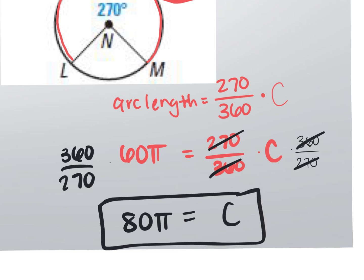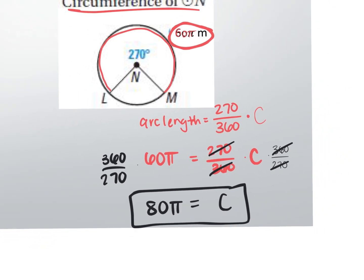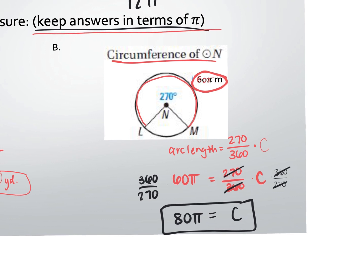Would this answer be completely correct? No — what am I missing? The units, which were meters. Make sure you put M next to the pi: 80π meters.